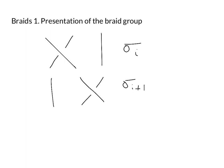...is what's called the braid relation. And it says: sigma_i sigma_{i+1} sigma_i equals sigma_{i+1} sigma_i sigma_{i+1}.